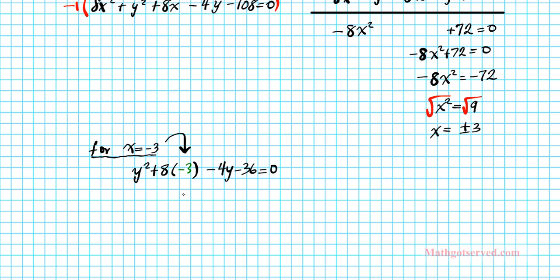So whenever you find one variable and you plug it into a conic equation, you will always end up with a quadratic equation. Let's write this resulting quadratic equation in standard form by simplifying terms. We have y² + 24. Actually, it's minus 24. Plus times a minus is minus. -24 - 4y - 36 = 0.